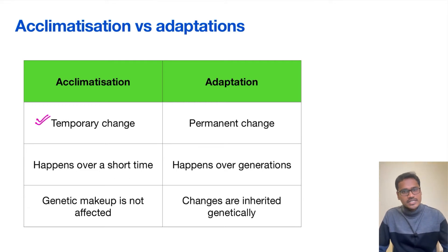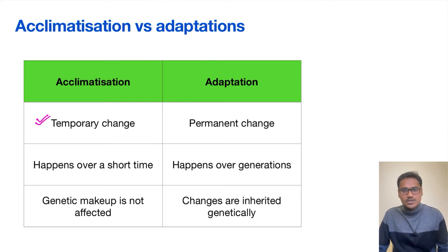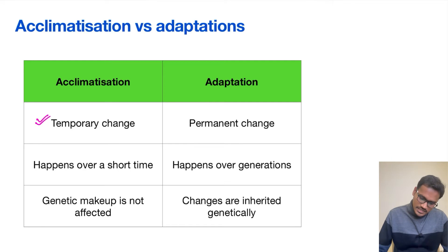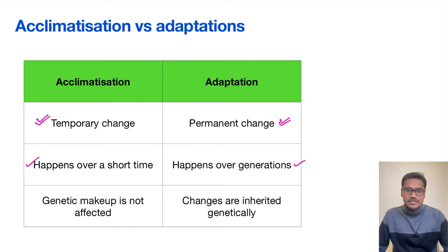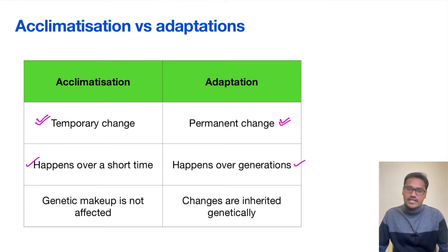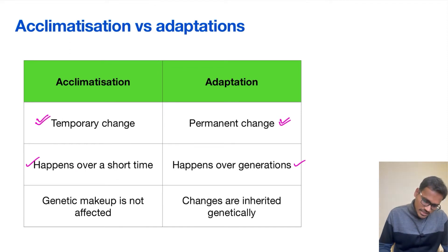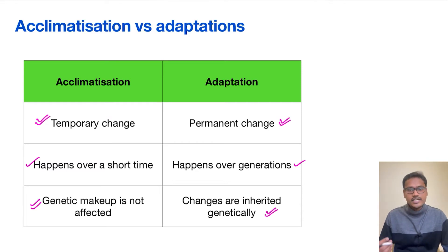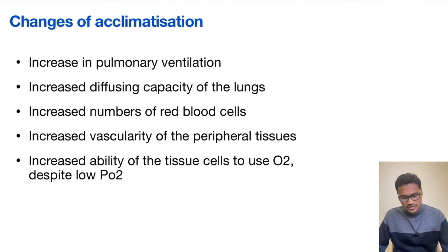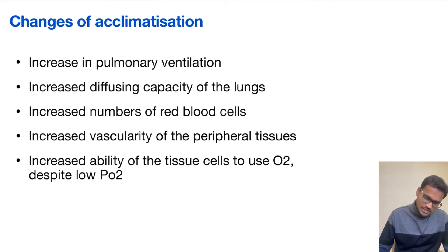Acclimatization is a temporary change — for example, a person goes to high altitude, stays for a few months, and comes back. When he returns to the lowland, the changes revert back. Adaptation, on the other hand, involves permanent changes that occur over generations. That is why mountain people who have lived there for generations have an inbuilt advantage in their genetic makeup itself, and these changes can be inherited genetically.